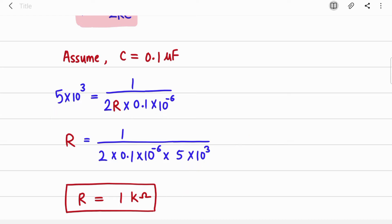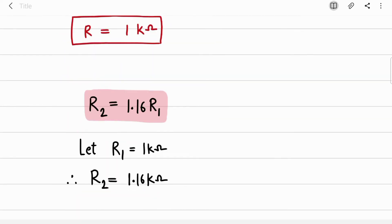You use the formula of frequency which is 1/(2RC). Now second step is R2 = 1.16 times R1. So you will just assume value of R1 over here and your R2 will be 1.16 kΩ.